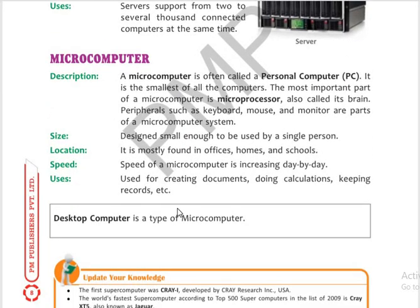Next is the microcomputer. The screen you are using right now is a microcomputer, also called a desktop computer or personal computer, with a keyboard, mouse, monitor, and optional printer or microphone. A microcomputer is often called a personal computer where one person can sit and access it. It is the smallest of all computers. The most important part of a microcomputer is the microprocessor — a small processor inside the CPU that handles complex programming and runs the whole system.